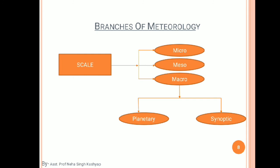Moving on to the third main branch category: scale. There are three scales — micro, meso, and macro. Micro-meteorology has a horizontal scale of less than 0.1 km and a vertical scale of up to 0.2 km. Meso-meteorology has a horizontal scale of 1 to 1,000 km and a vertical scale of 1 to 10 km. Macro-meteorology has been divided into two categories: planetary and synoptic scale.